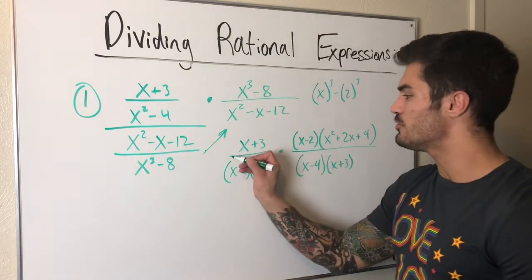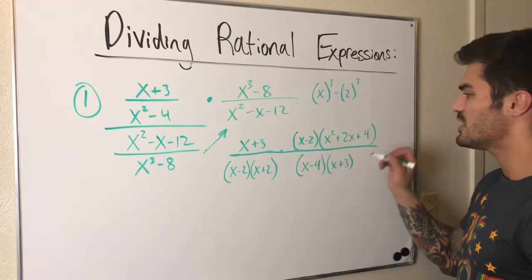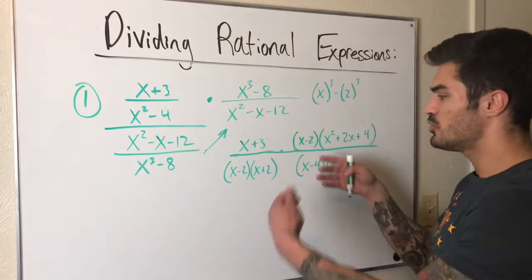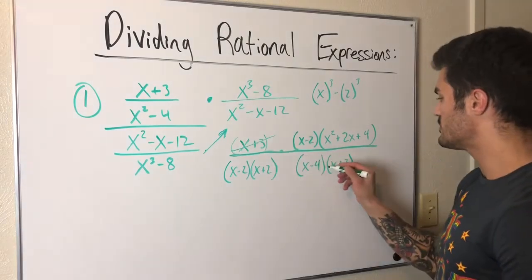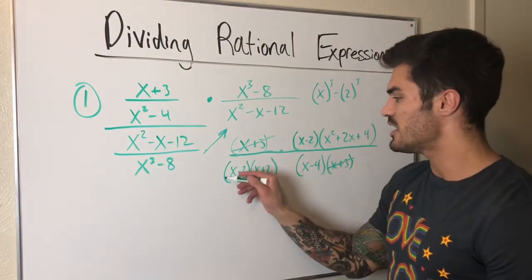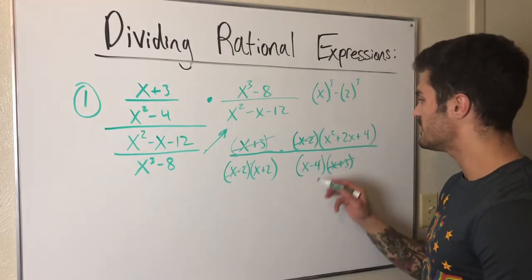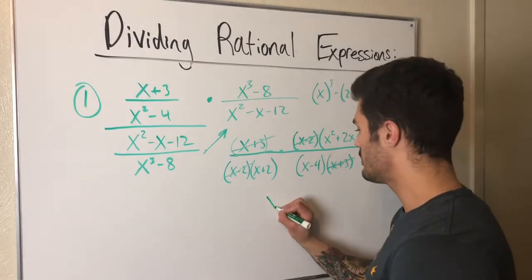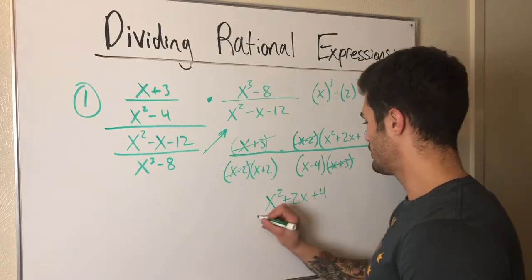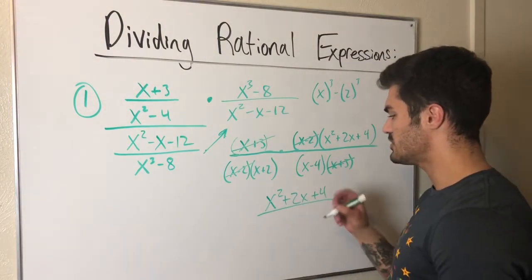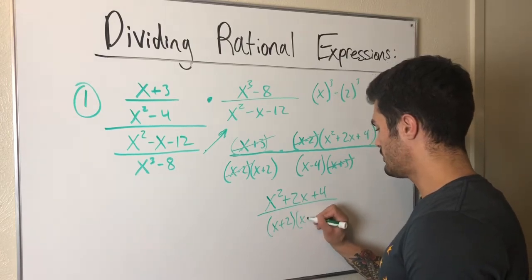This can all be written as one big fraction. Now I can see what cancels: the (x+3) cancels with the (x+3), and the (x-2) cancels with the (x-2). So my final answer is (x squared + 2x + 4) over (x+2)(x-4), and that is our final answer.